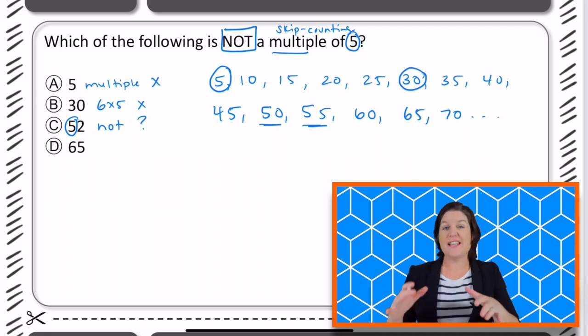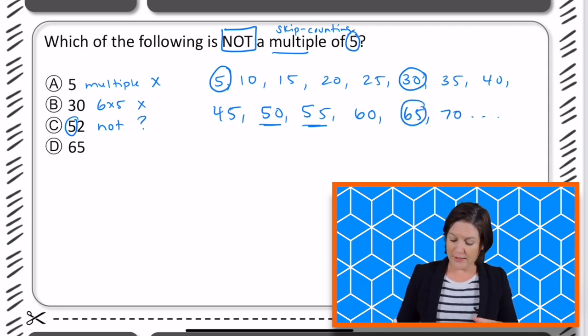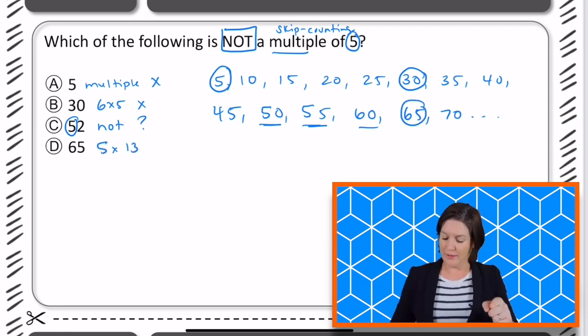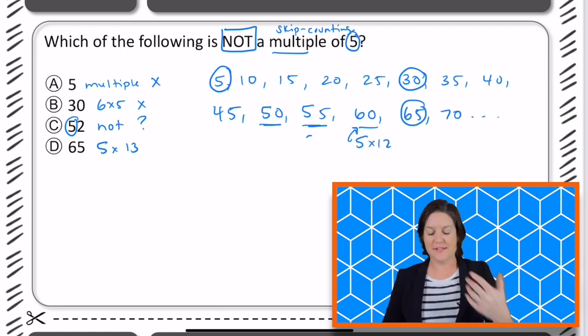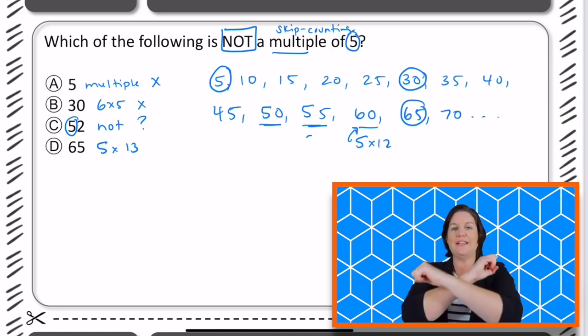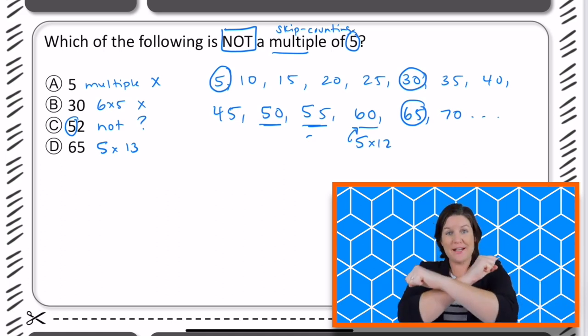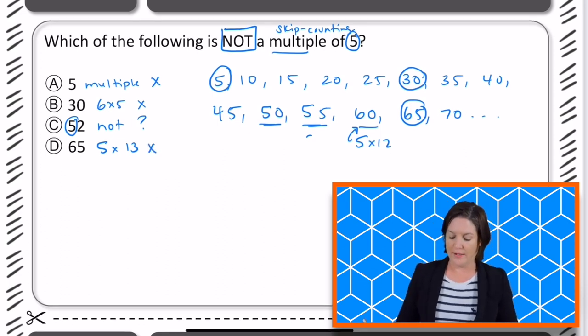And then D says 65. 65, which is right here, so that one is a multiple of five. That would be five times 13, actually, because five times 12 equals 60. So five times 13 is that next one. That's just a little bit of bonus. So should we keep D or eliminate it? Let's eliminate it because it is a multiple and we're looking for the one that is not.